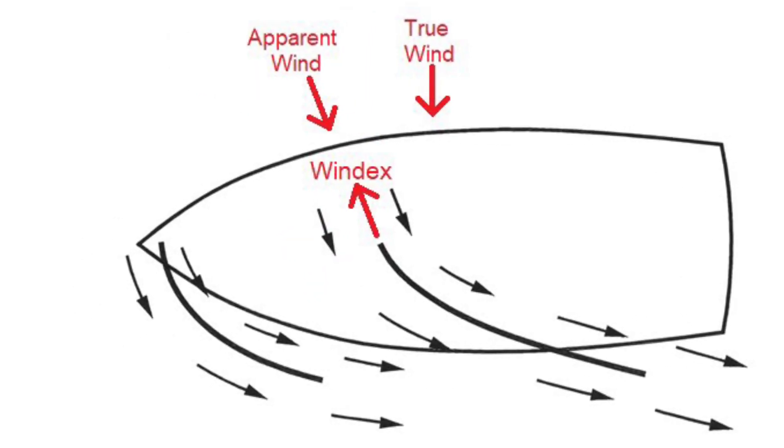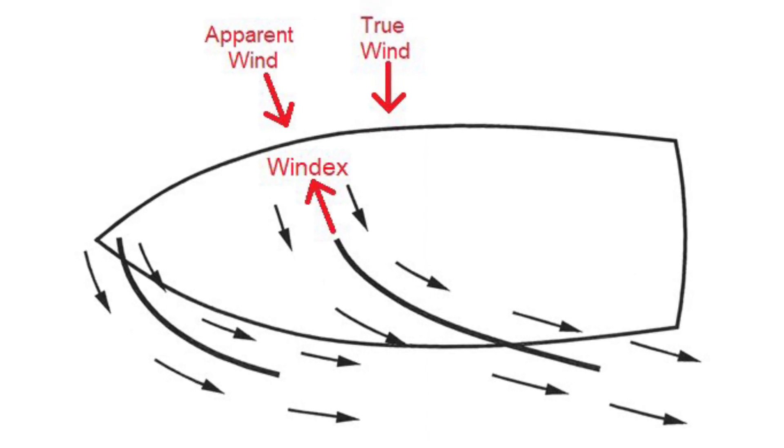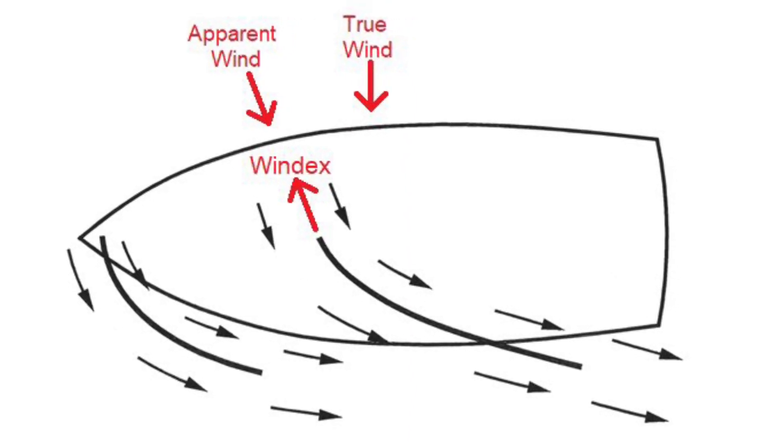However, as the boat begins to move, the motion of the boat generates its own wind, which when combined with the true wind, creates an apparent wind that comes from further forward than the true wind.